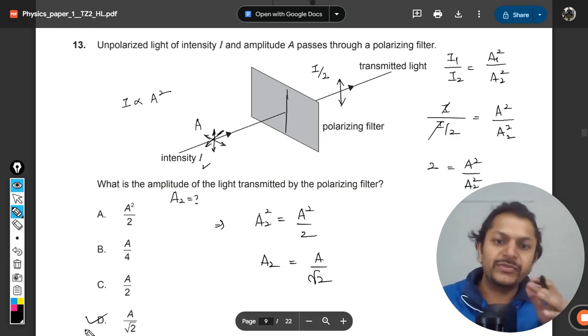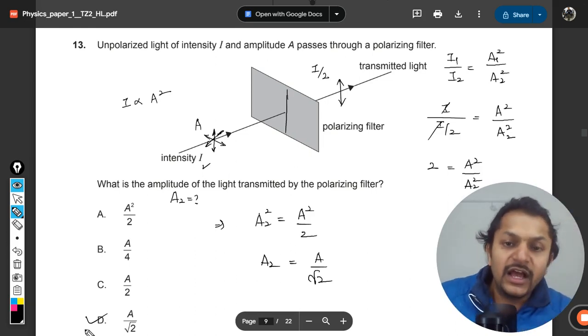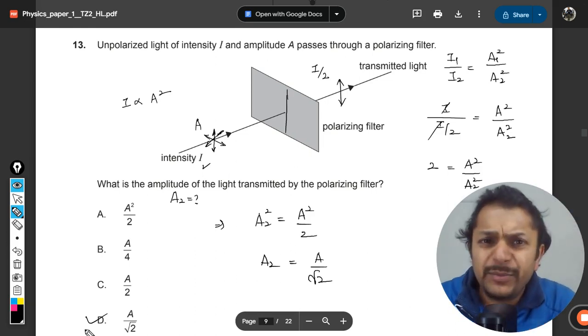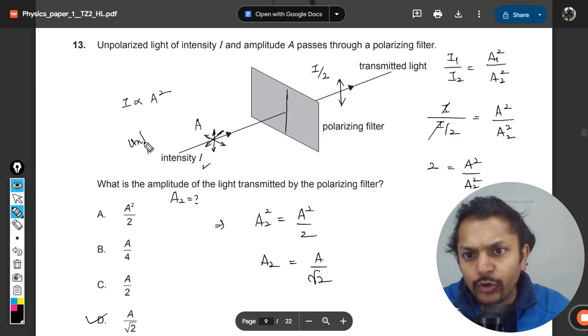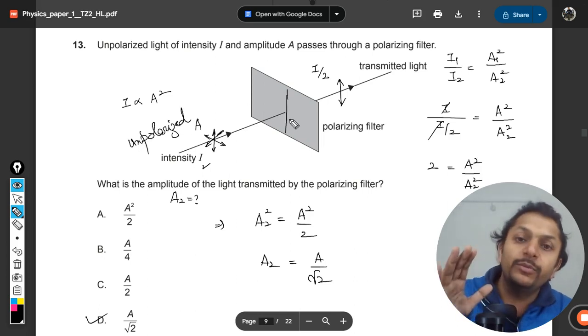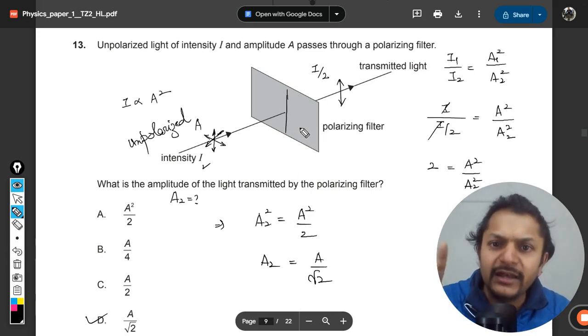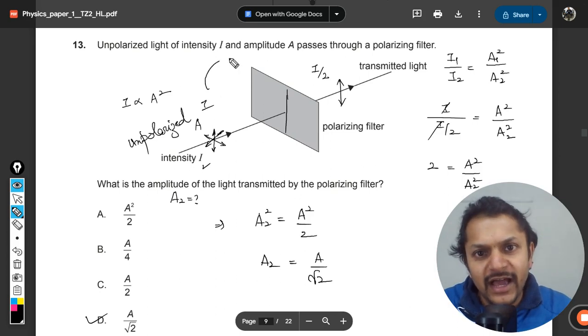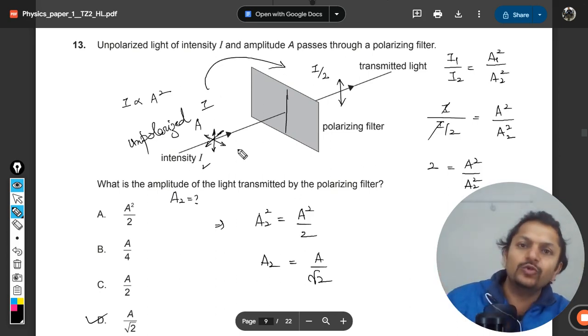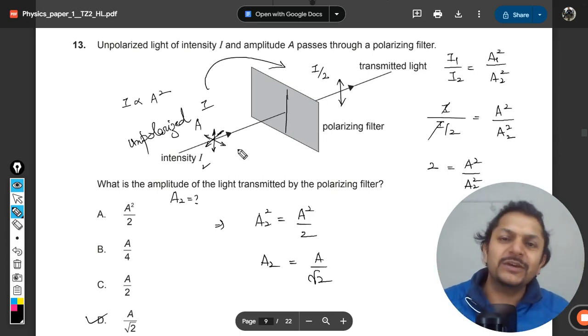This is how we do this, and the only piece of information that you need to remember for this kind of question is that if this is unpolarized light and it is passing through the polarizer for the first time, then there is no Malus law in this. Directly the intensity is I and it is converted into I by 2. That's it.